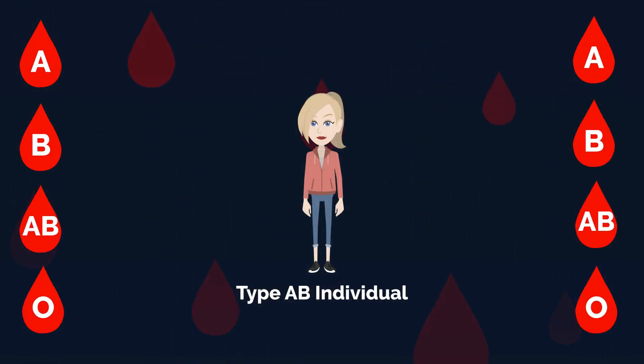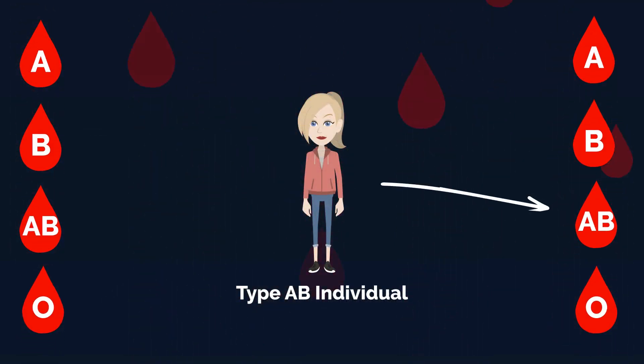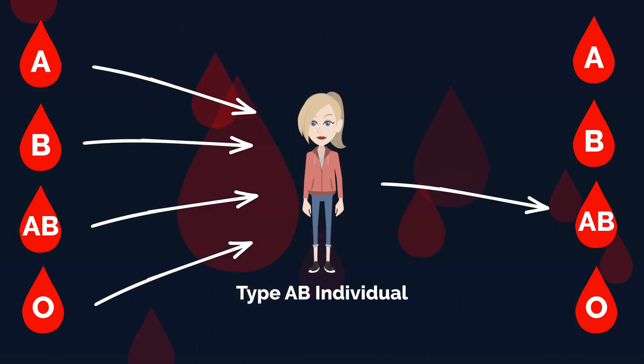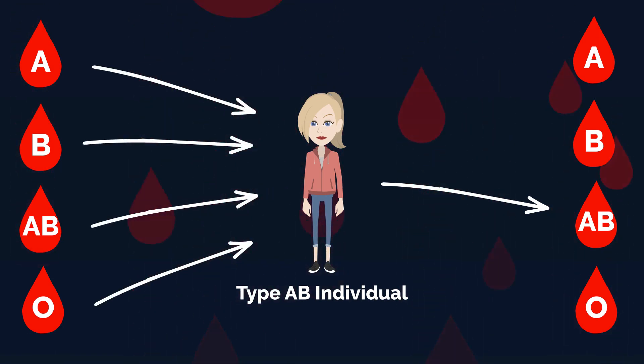Type AB. Individuals with type AB can donate blood only to individuals with similar type AB blood, but can receive blood from any other blood type.